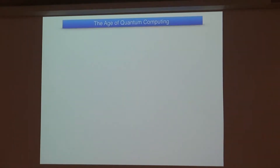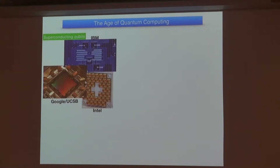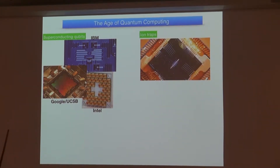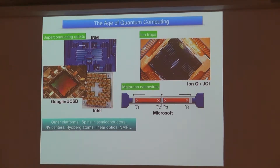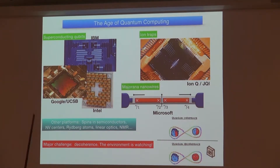It's posted on archive. Let's begin with experiments. Some people believe it's already the age of quantum computation, at least by the industrial people. There are lots of efforts on building superconducting qubits, ion traps, and Majorana qubits, among others. I mention this because our theory can potentially be applied to all of them. The major challenge towards the ultimate goal of quantum computing is really the decoherence due to the environment, which is always watching quantum systems and decohering quantum information.